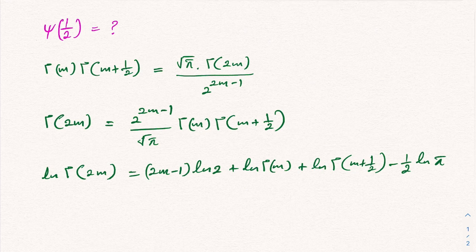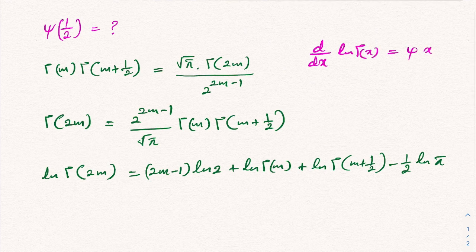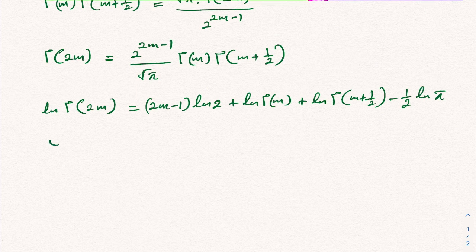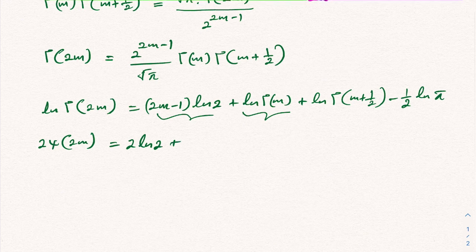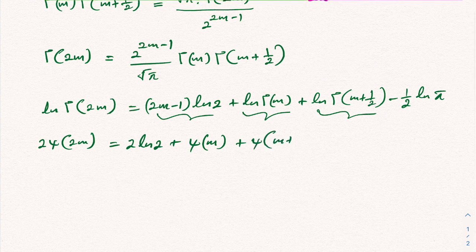Then I am going to differentiate both sides with respect to m. We know that differentiating the natural log of gamma of x gives the digamma function, psi(x). Differentiating the left side gives 2 times psi(2m), because of the chain rule coefficient. The right side gives 2 times natural log of 2, plus psi(m), plus psi(m plus one half), and the constant term vanishes.